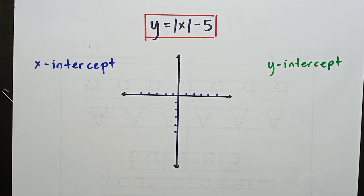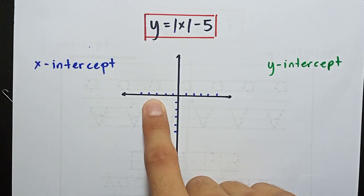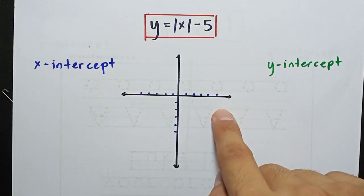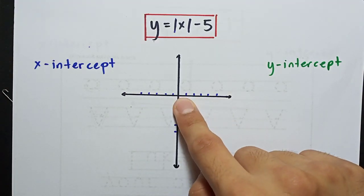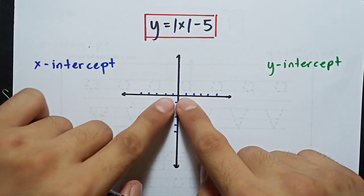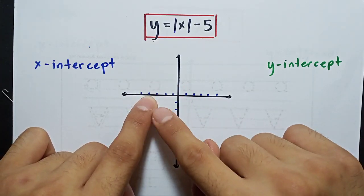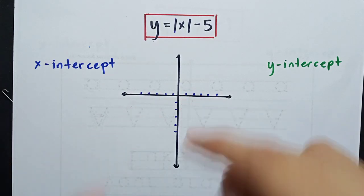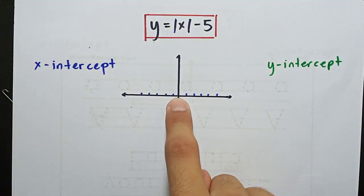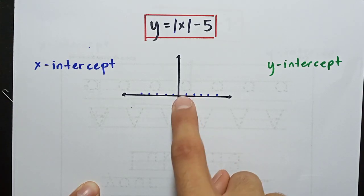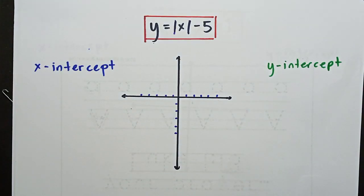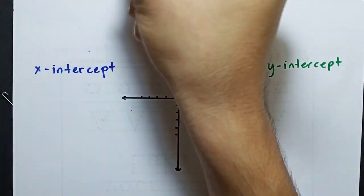First, to find the x-intercept, we need to equate y equals to 0. Because the x-intercept is where the line will intercept the x-axis. And the x-axis is located at y equals to 0. Meaning, to find the point where the line intercepts the x-axis, we need to equate y equals to 0. This is the x-axis, where y equals to 0.